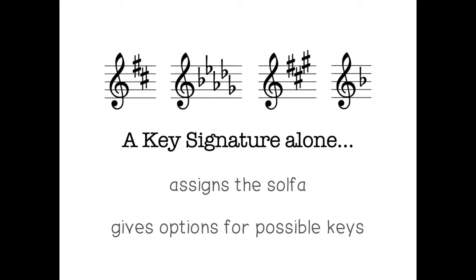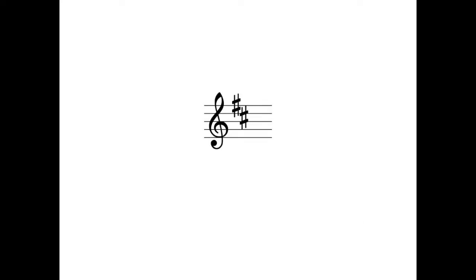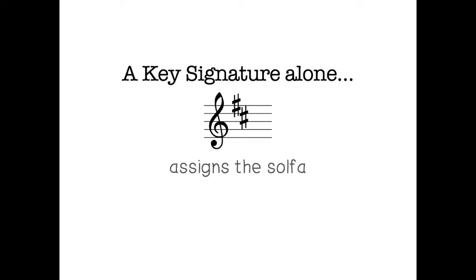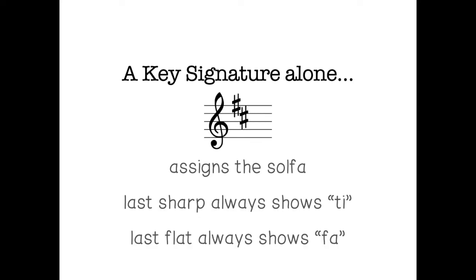So let's think about that again. So here's a key signature, for an example, all by itself. So we can assign the solfa. If we remember the two little bits of information, that the last sharp always shows ti, and if it was a different key signature, we would need to remember that the last flat always shows fa. So there are two little facts that you just need to memorize to be able to do this.